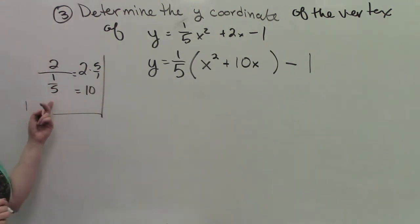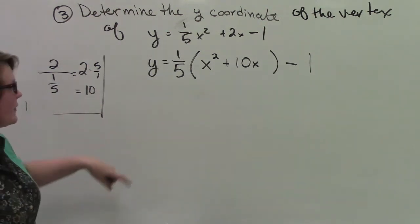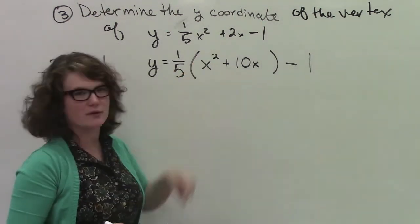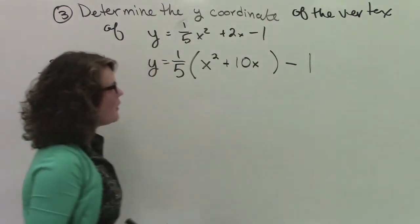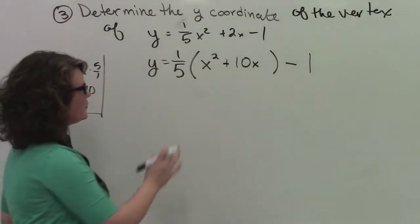So that's what we're actually doing. We're dividing by 1 fifth. 2 divided by 1 fifth is 10. And we don't have to worry about that 1. We're just going to worry about the first 2.